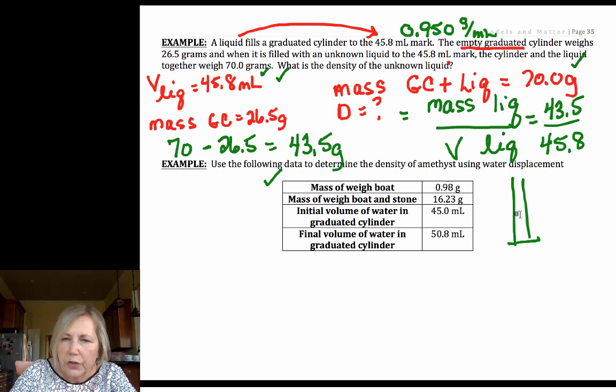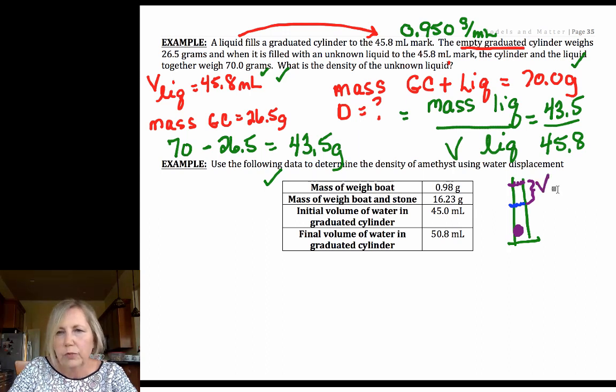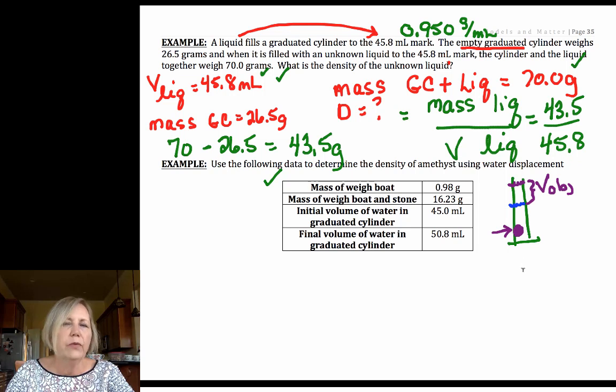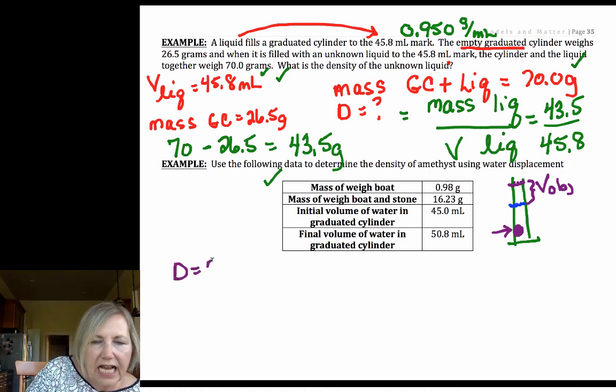So what you would do is you'd have your graduated cylinder and you fill it to the mark with water. Then you drop the object in, and that's going to displace because the object has volume. It's going to displace the water. So the difference is going to be the volume of your object. So the volume of water that is displaced correlates exactly with the volume of that irregular object.